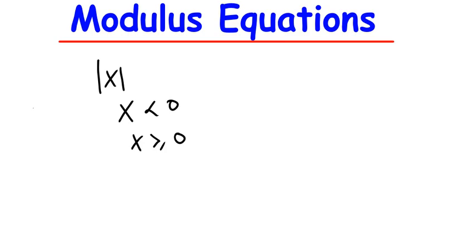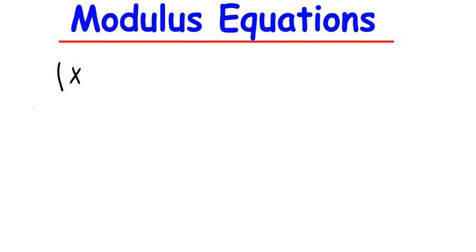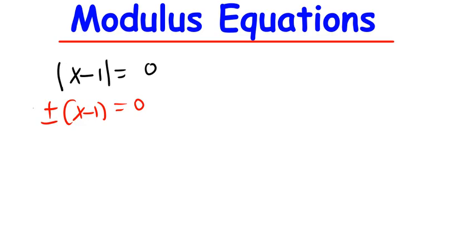For example, let's say we want to solve a simple question: the Modulus of x minus 1 equals 0. Where there is Modulus, when you are removing it, just add plus or minus. The first part, you multiply by positive — nothing changes. So that becomes x minus 1 is equal to 0, and x will be equal to 1.